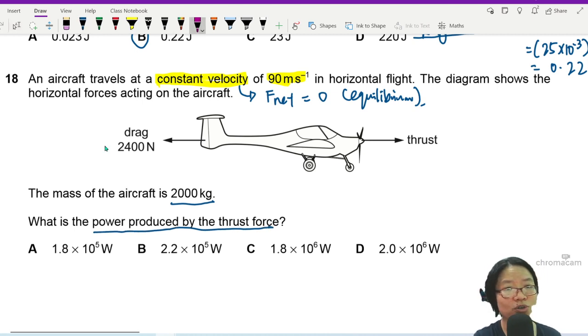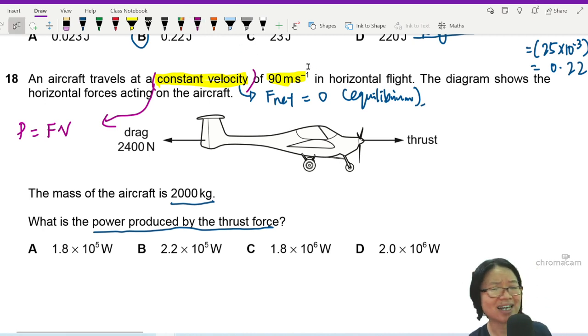Whenever there's constant velocity, I can use the equation of power is equal to force times velocity. But miss, the net force is zero. Yeah, the net force is zero, but I want the power produced by the thrust force.